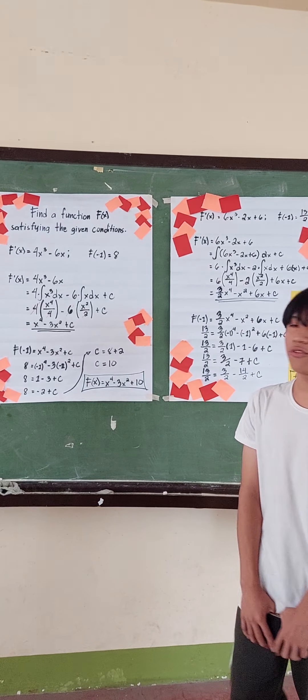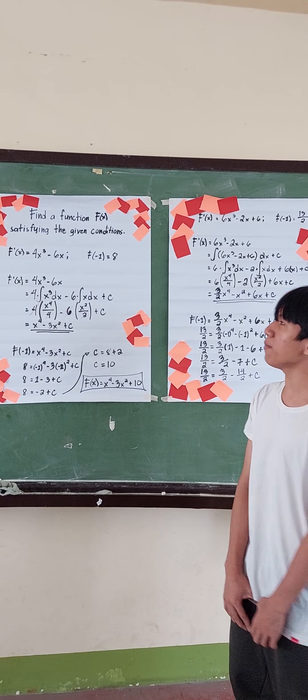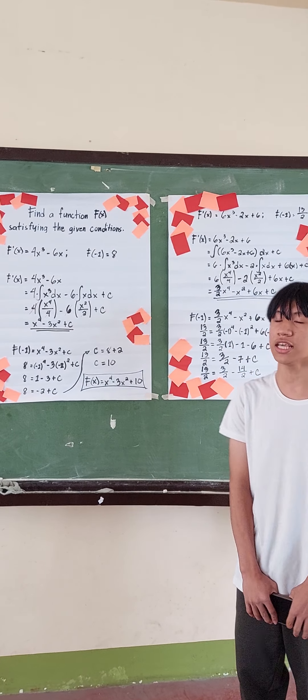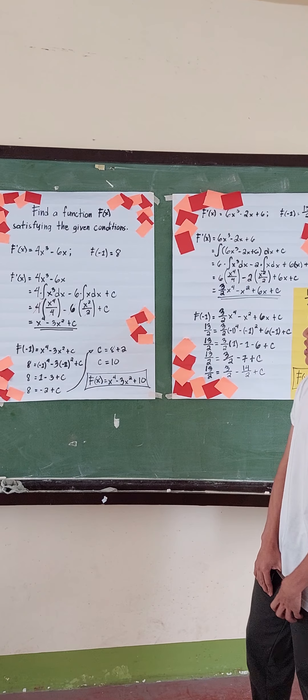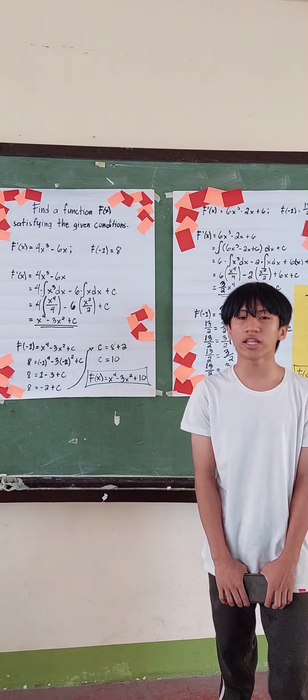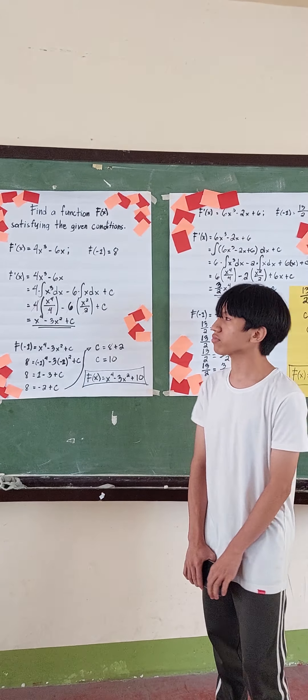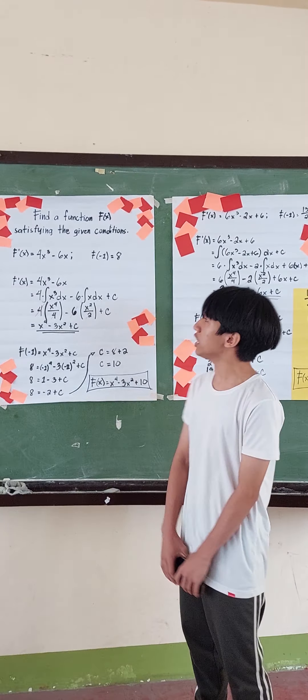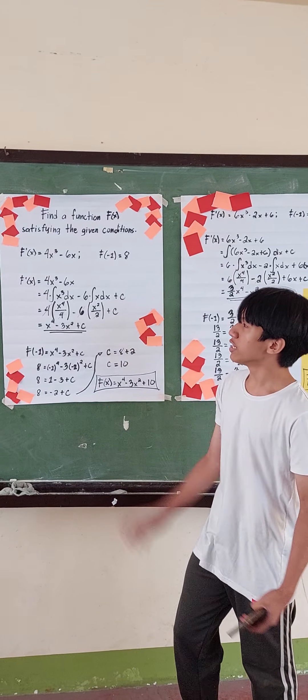For number 4, we have f prime of x equal to 4x cubed minus 6x, and f of negative 1 is equal to 8. So now we have to find the integration of these functions.